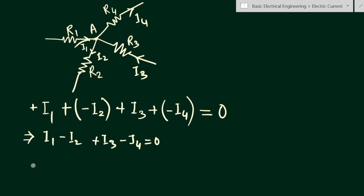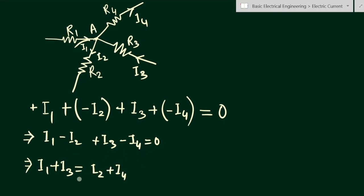From this equation we can write I1 plus I3 equals I2 plus I4, by taking the two outward currents to the right-hand side. This shows that the currents entering the junction equal the currents leaving the junction. That is Kirchhoff's Current Law.